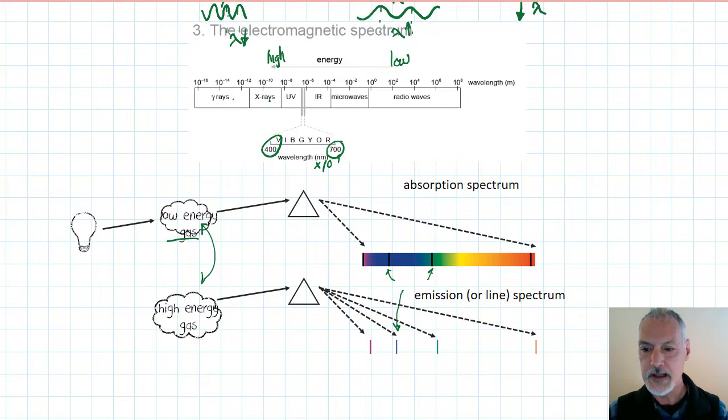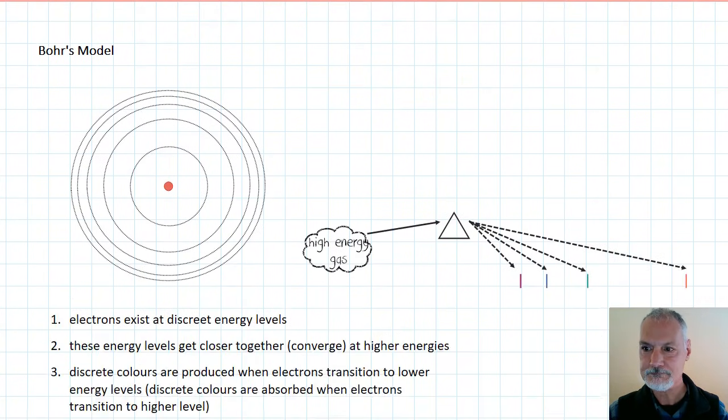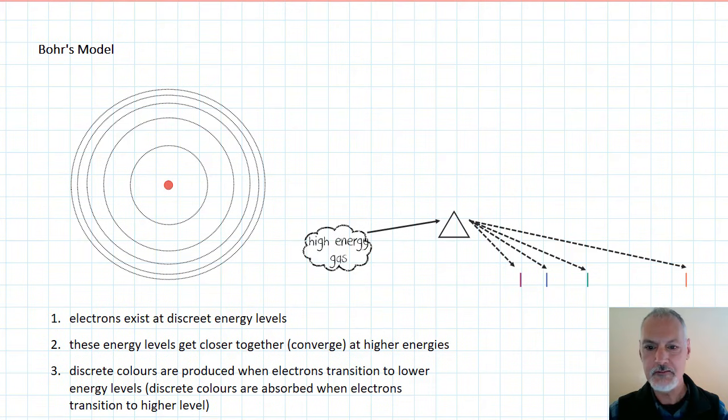What Niels Bohr looked at was hydrogen gas and he came up with an explanation for this behavior, this complementary behavior of our two spectra. Let's look at how he did that. I'm going to focus on first of all the line or emission spectrum.